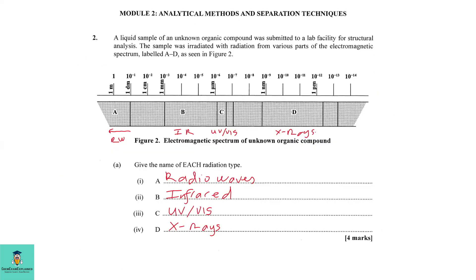A liquid sample of an unknown organic compound was submitted to a lab facility for structural analysis. The sample was irradiated with radiation from various parts of the electromagnetic spectrum labeled A to D as seen in figure 2. So here we have figure 2.